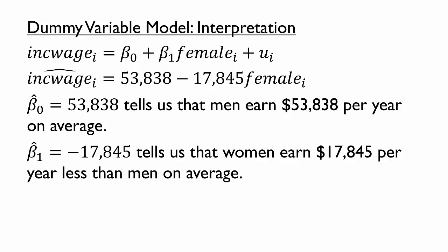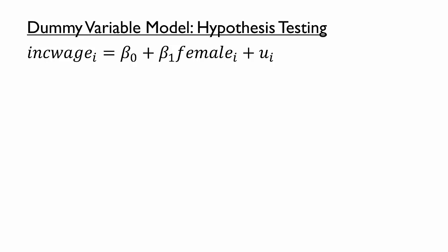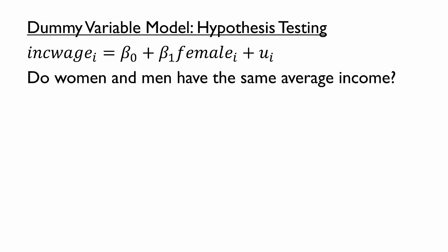First, dummy variables are useful for hypothesis testing. Suppose we wanted to test statistically whether women and men have the same average income. Beta 1 represents the difference in average income between women and men, so the null hypothesis, beta 1 equals 0, would mean that there is no gender pay gap.